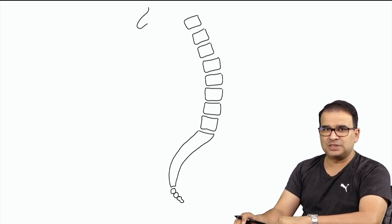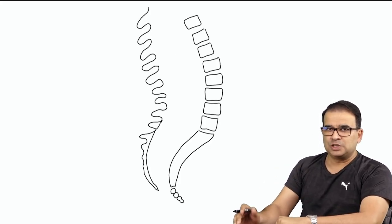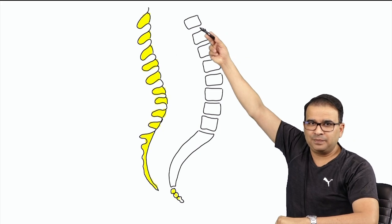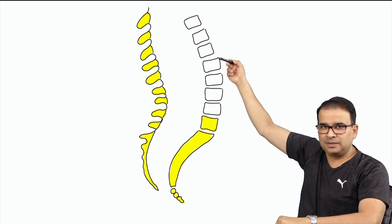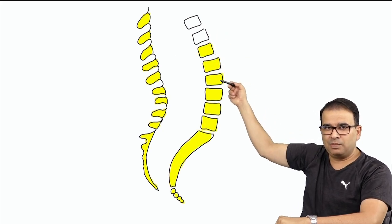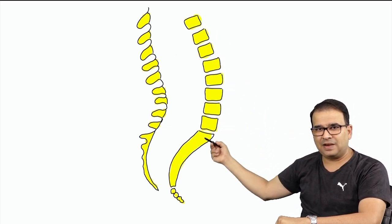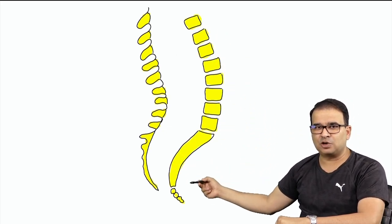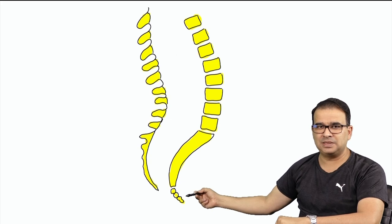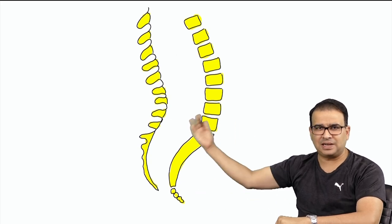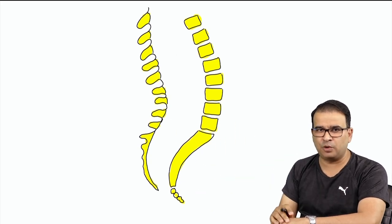Let us say we are looking at a sagittal section of the lower part of the vertebral column. These are the lower lumbar vertebrae, and then we have the sacrum and the coccygeal vertebrae visible in this sagittal section.